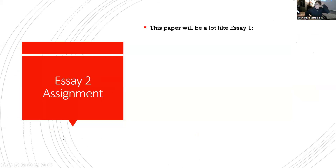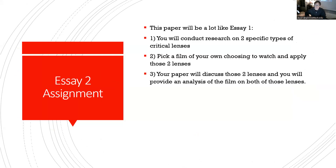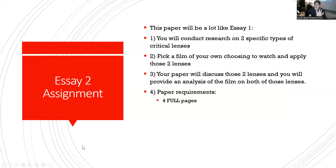Essay 2 assignment: as discussed last week, this will look a lot like Essay 1. You'll conduct research on two specific types of critical lenses, pick a film of your own choosing to watch and apply those two lenses, and your paper will discuss and provide analysis of the film through both lenses. The lenses were listed in last week's PowerPoint — go back and look if needed. Paper requirements: four full pages, two secondary sources, one film, a works cited page, proper MLA formatting, and integrated quotes with parenthetical citations.